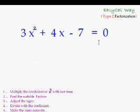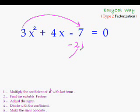Now you have to solve this equation: 3x² + 4x - 7 = 0. I'm really sure you can do it very easily. Start. Did you get the answer? The first step is to multiply the coefficient of x square with the last term: 3 times minus 7 is minus 21. Find the suitable factors. Two factors of 21 whose sum or difference is 4 would be 7 and 3.